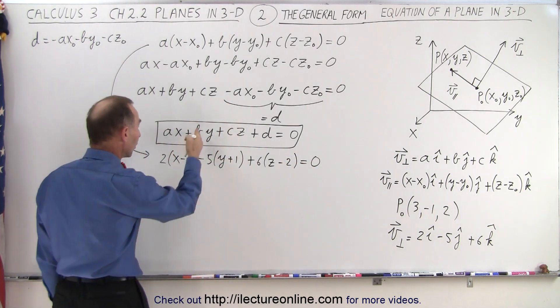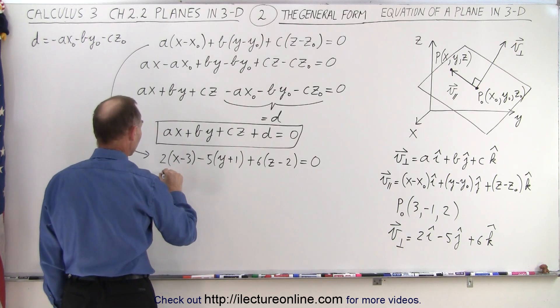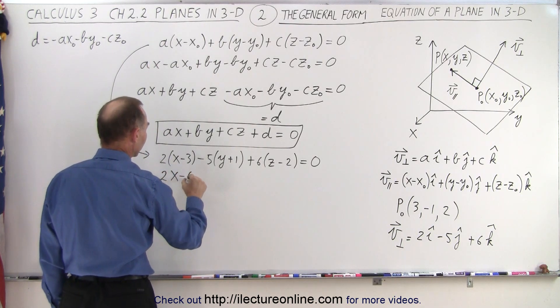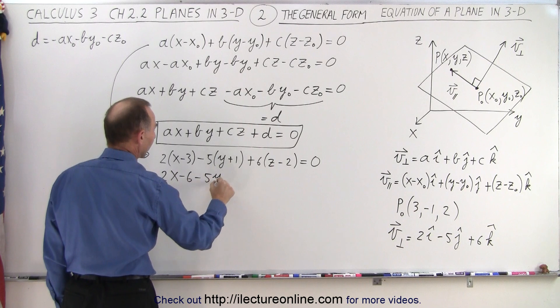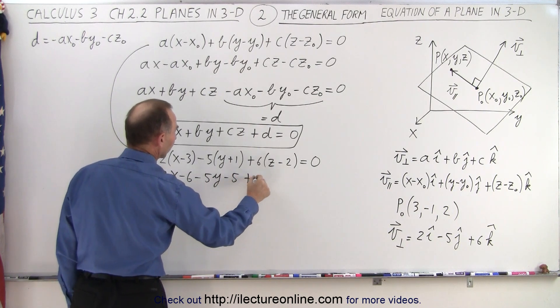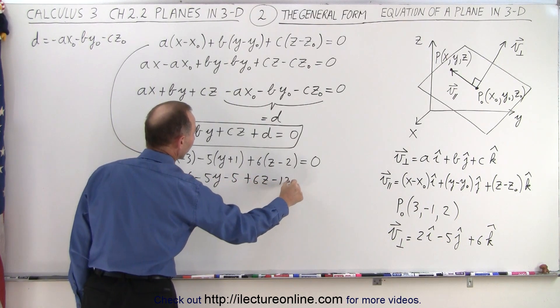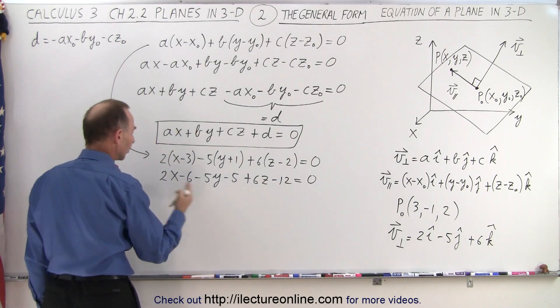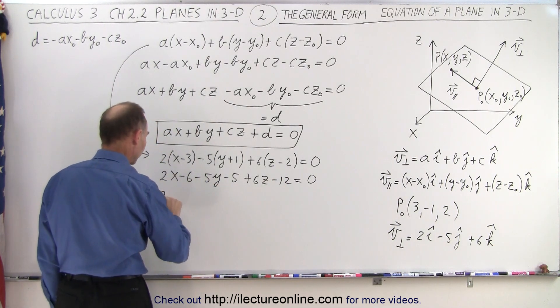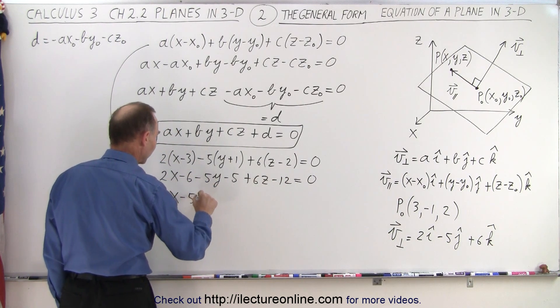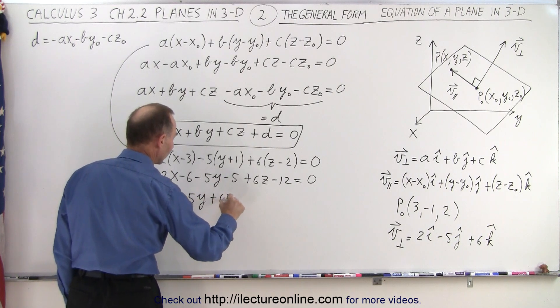So now let's transform that into our general form. In this case, we get 2X minus 6 minus 5Y minus 5 plus 6Z minus 12 is equal to 0. Now we're going to separate the terms. We have 2X minus 5Y plus 6Z.